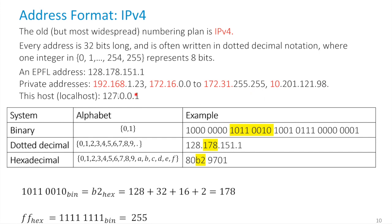There is also the special address 127.0.0.1, called localhost, meaning 'this machine.' If process A sends a packet to process B at this address, A and B are on the same machine. This is useful for inter-process communication — for example, a web client and web server on the same machine during debugging. You give both the localhost IP address and use the same software. These are addresses we will very often use.